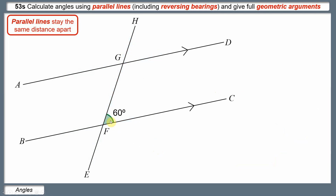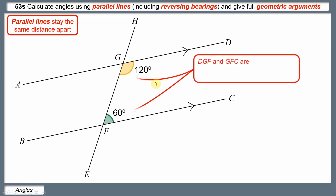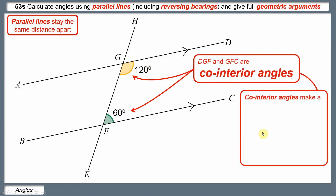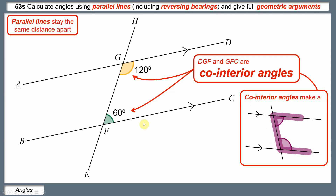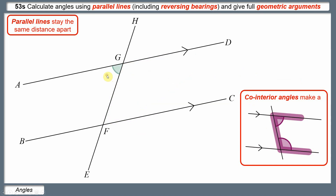Sometimes we want to use the fact that the acute angle and the obtuse angle that are made add up to 180 degrees. So if CFG is 60, FGD is 120 — they add up to 180. They're not angles on a straight line or in a triangle, so we need another reason. The reason is that they are co-interior angles. Co-interior angles are easy to recognise because they make a C shape — and co-interior angles add up to 180. We also have co-interior angles on the other side of the diagram, where the C shape would be backwards.